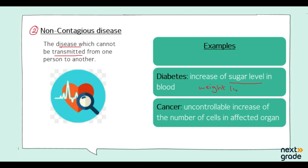Diabetes also causes a lot of fatigue. It affects many organs of the body such as your heart, your kidneys, and your eyes. So diabetes is a disease that impacts multiple organs throughout the body.